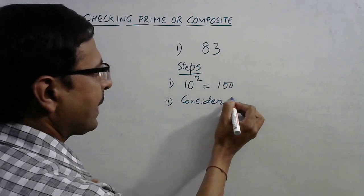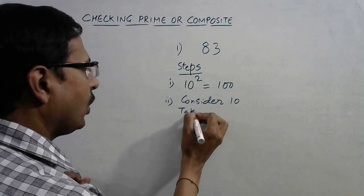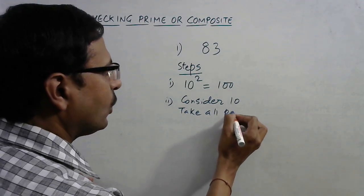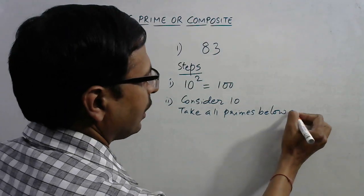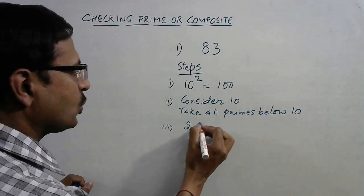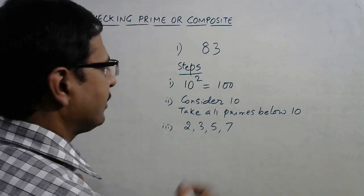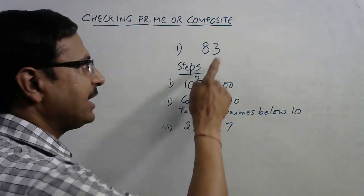And take all primes below 10. So I need to write all primes below 10, so the primes are 2, 3, 5, 7 - only 4 primes. And now we need to test whether this number 83 is divisible by 2, divisible by 3, divisible by 5, or divisible by 7.